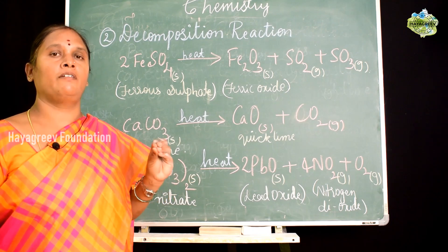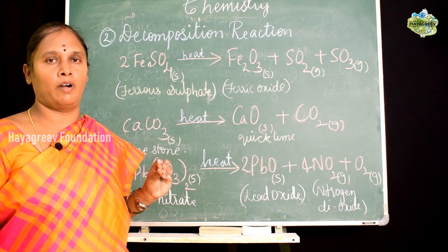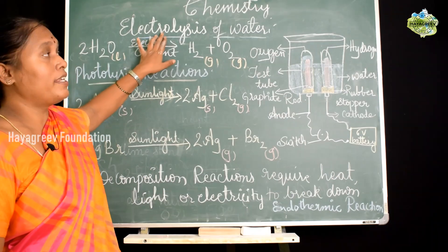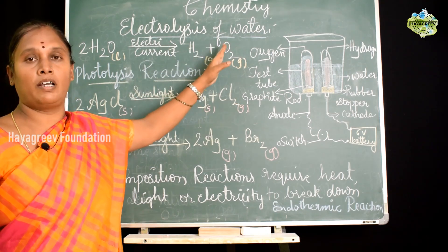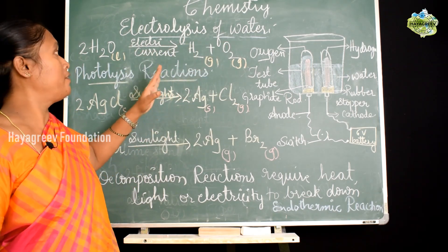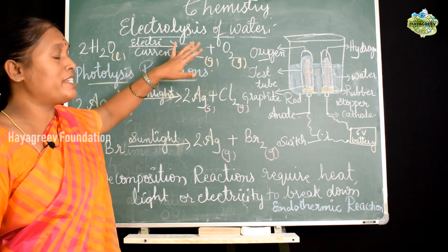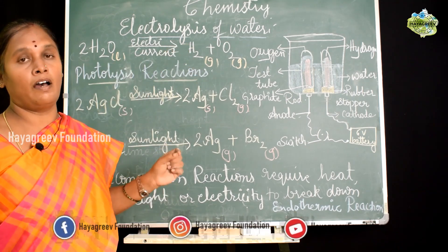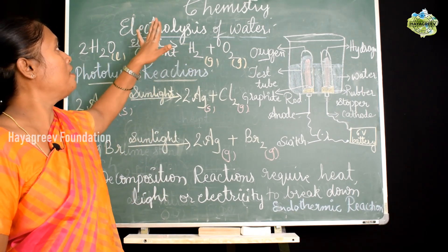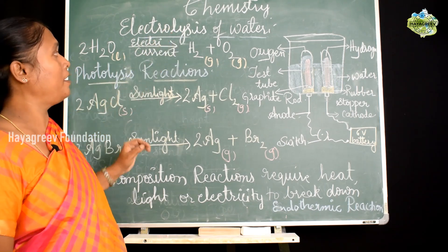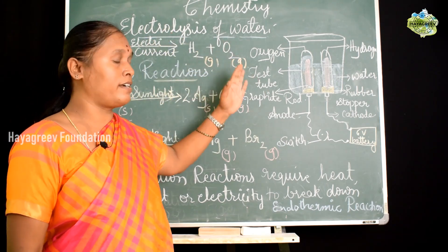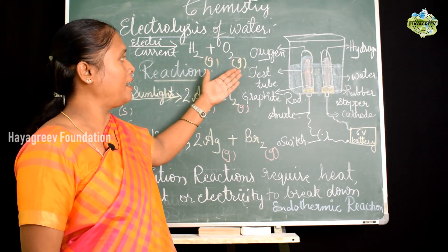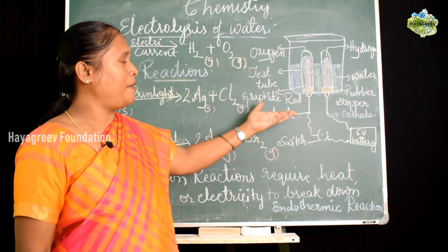Another example of a decomposition reaction is the breakdown of water in the presence of electricity, otherwise called electrolysis of water. The name itself explains the process — electrolysis means breaking down of a molecule in the presence of electric current. So electrolysis of water means using electricity to break down water into its component atoms.